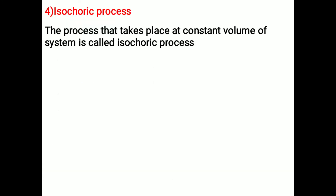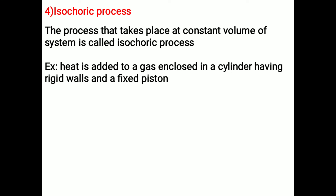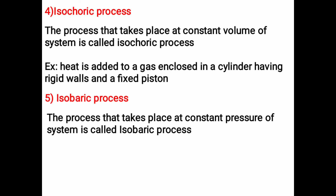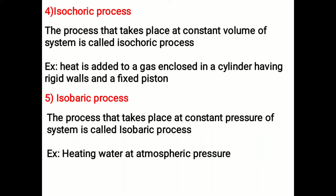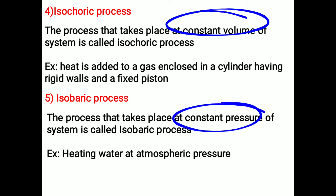Isochoric process: the process that takes place at constant volume of a system is called an isochoric process. Example: heat added to a gas enclosed in a cylinder with rigid walls and a fixed piston. Isobaric process: the process that takes place at constant pressure of a system is called an isobaric process. Example: heating water at atmospheric pressure. The difference is that isochoric is at constant volume while isobaric is at constant pressure.